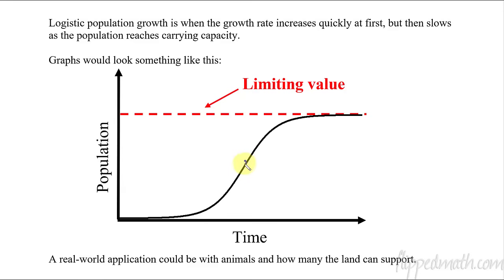So a couple things I want to point out with this before we start getting into some formulas, and that is right here at the point of inflection. Let's put a little dot, and this point of inflection is an important value because this value, before it, the rate is increasing. Notice the population is growing faster, and faster, and faster, and faster. After this point of inflection, the population is still growing, but it is slowing down.